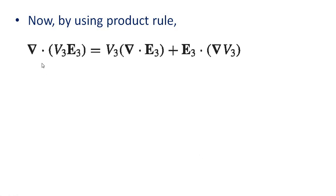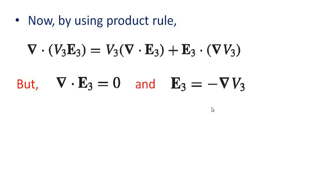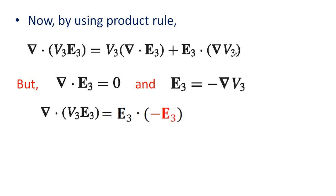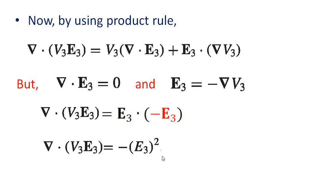Now, using the product rule: del dot (V3 E3) equals V3 times (del dot E3) plus E3 dot (grad V3). But del dot E3 equals 0, so the first term vanishes. Since E3 equals minus grad V3, we have grad V3 equals minus E3. Substituting, del dot (V3 E3) equals E3 dot (minus E3), which equals minus E3 squared.